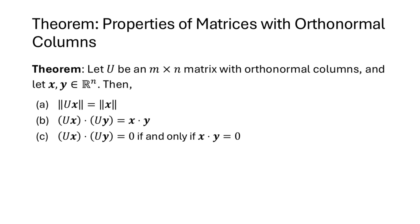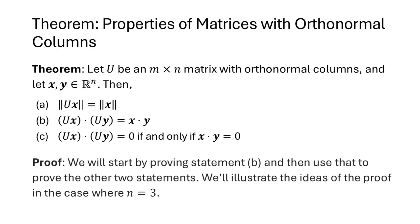Matrices with orthonormal columns have even more nice properties. If U is an m by n matrix with orthonormal columns and x and y are vectors in Rn, then: part a says the length of Ux equals the length of x; part b says Ux dot Uy equals x dot y; and part c says Ux dot Uy equals zero if and only if x dot y equals zero. We'll start by proving statement b, then show how a and c follow, using the case where n equals three.